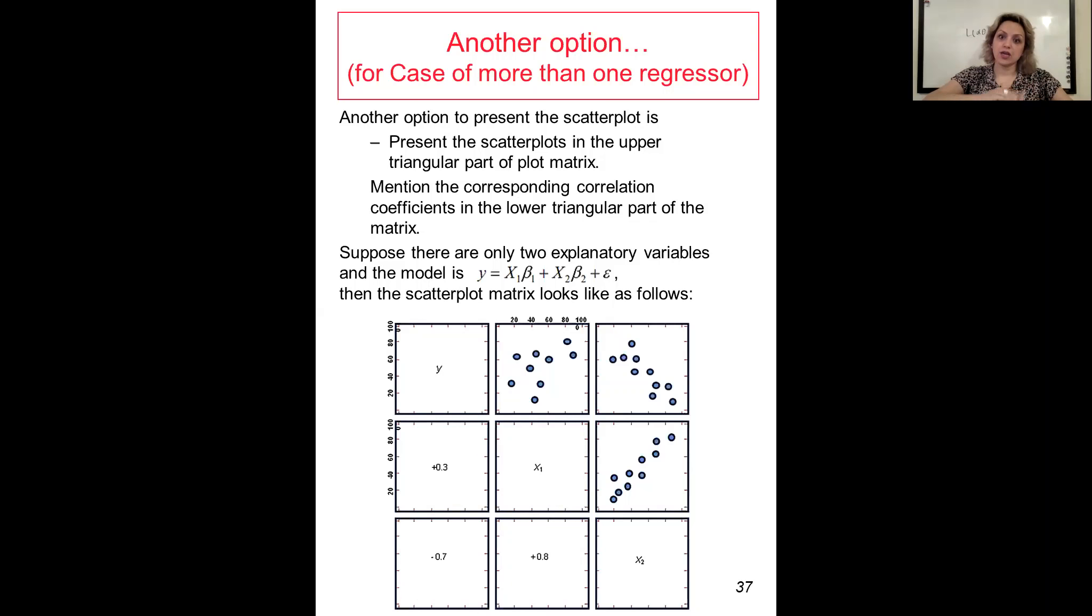You would write down the correlation coefficient for it. For example, minus 0.7 is the correlation coefficient for this one, and 0.8 is the correlation coefficient for this one. This is one way of presenting them in the scatter plot when we have more than one regressor or explanatory variable.